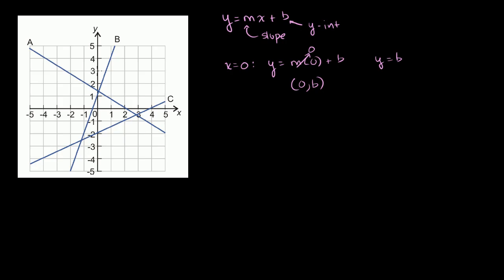So the point (0, b) is going to be on that line, and the line will intercept the y-axis at the point y is equal to b. We'll see that with actual numbers in the next few videos. And just to verify that m is really the slope, let's try some numbers out. We know the point (0, b) is on the line. What happens when x is equal to 1? When x is equal to 1, you get y is equal to m times 1, or y is equal to m plus b. So we also know that the point (1, m+b) is also on the line.